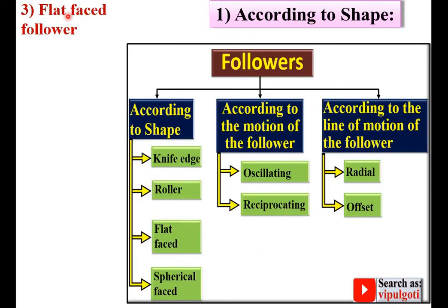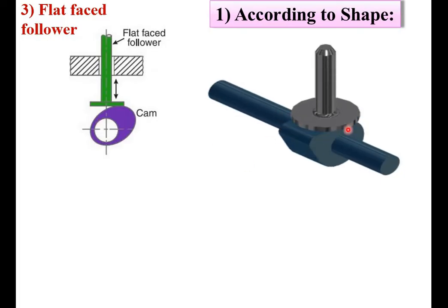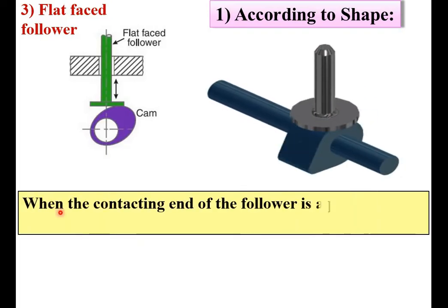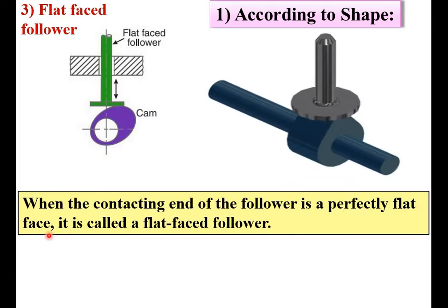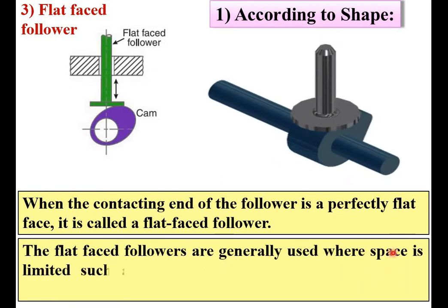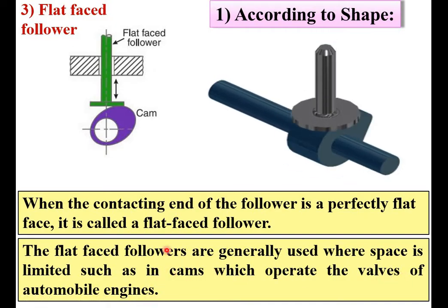Next, the flat face Follower. Here you can see the face is flat. When the contacting end of the Follower is a perfectly flat face, it is called a flat face Follower. The flat face Follower is generally used where space is limited, such as in cams which operate the valves of the automobile engine.